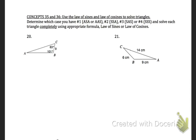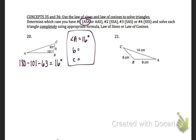This first triangle has angle C, the side between them, and angle B — so this is the angle-side-angle case, which means we're going to use law of sines. First, I can easily solve for the missing angle by taking 180 minus 101 minus 63, and I get angle A equal to 16 degrees.